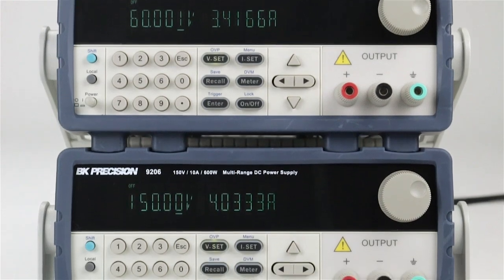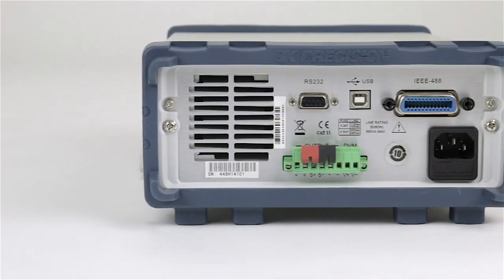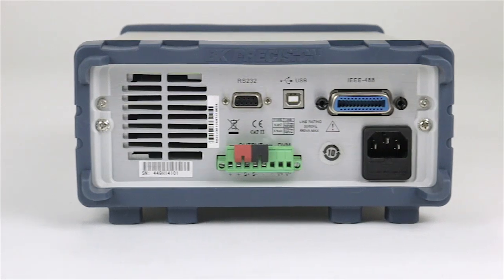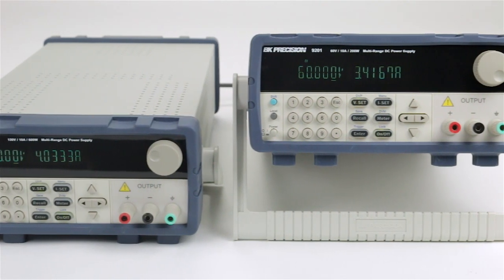The 9200 series of multi-range power supplies are part of a wide selection of performance power supplies offered by BNK Precision. This series has four members offering up to 150 volts and 600 watts.